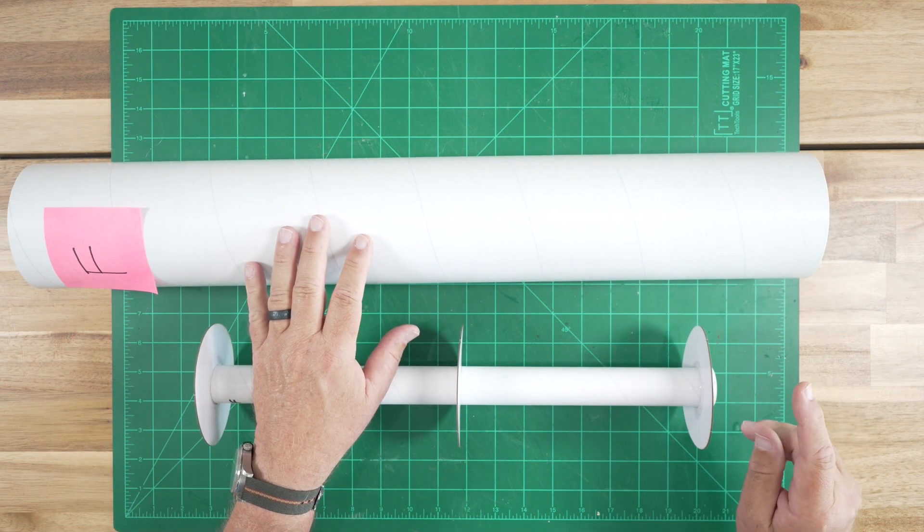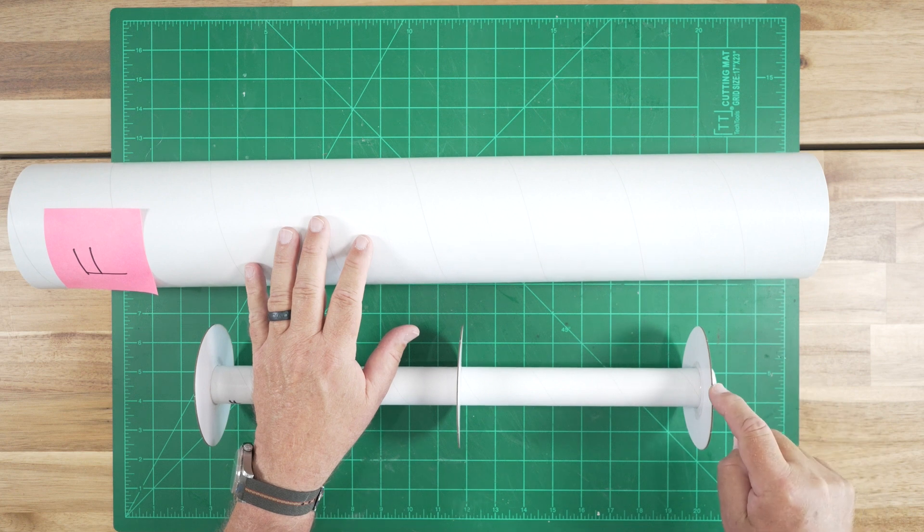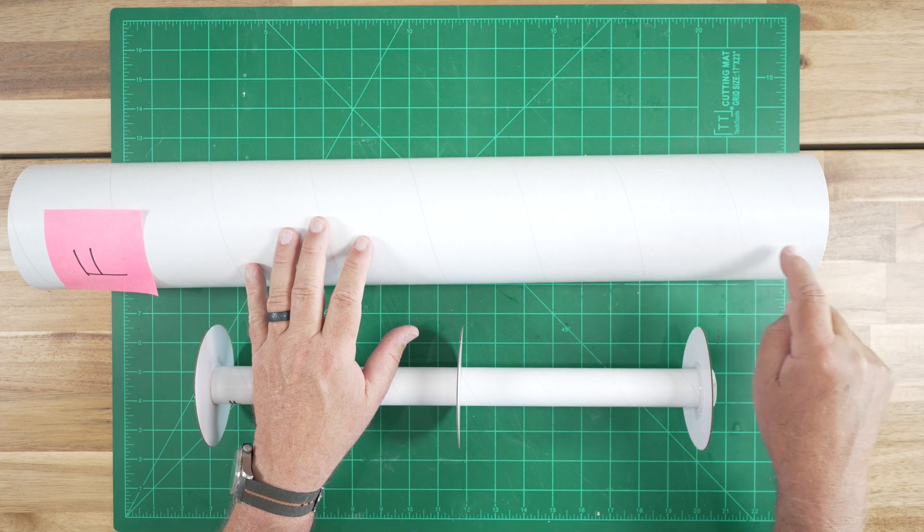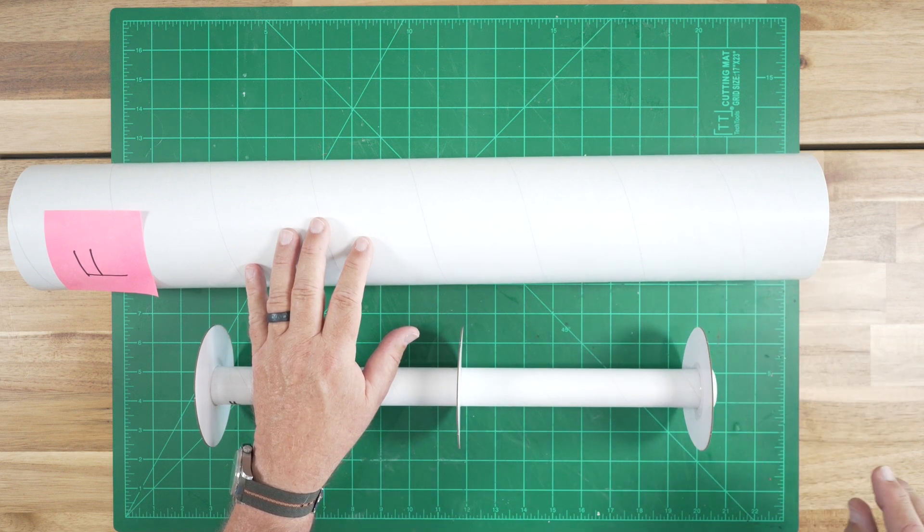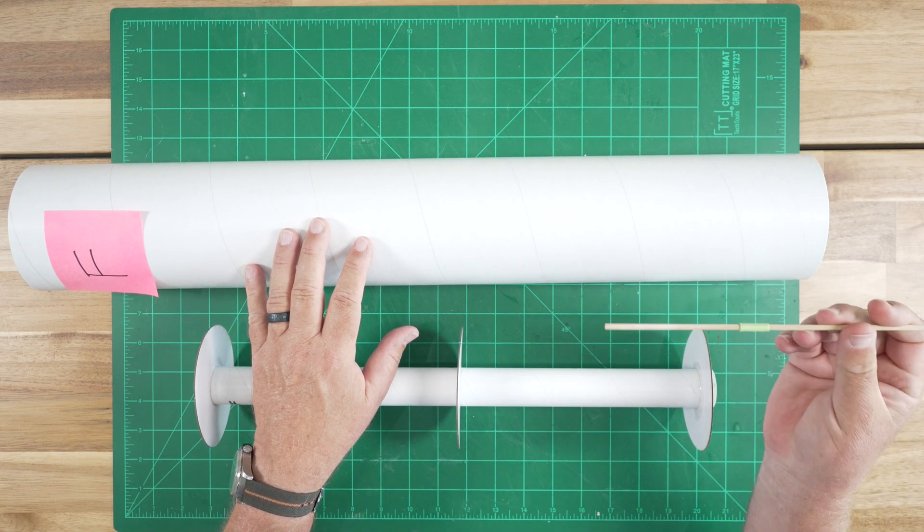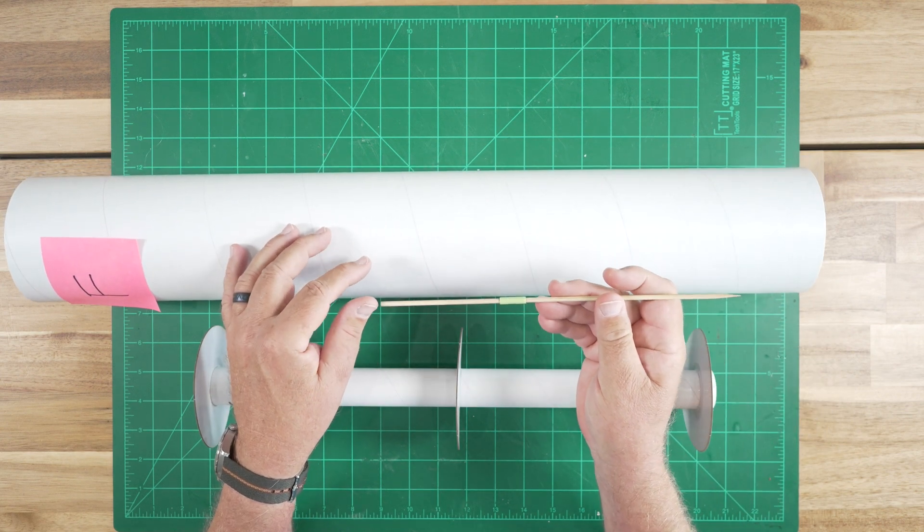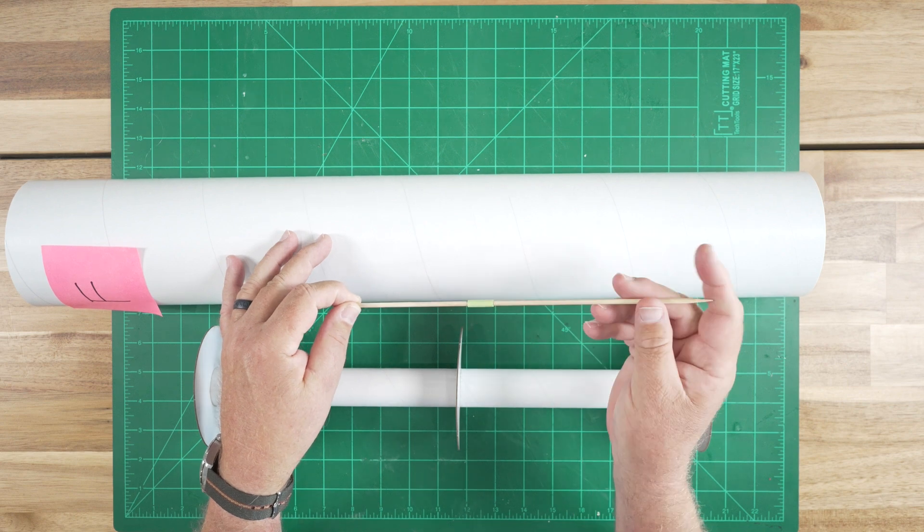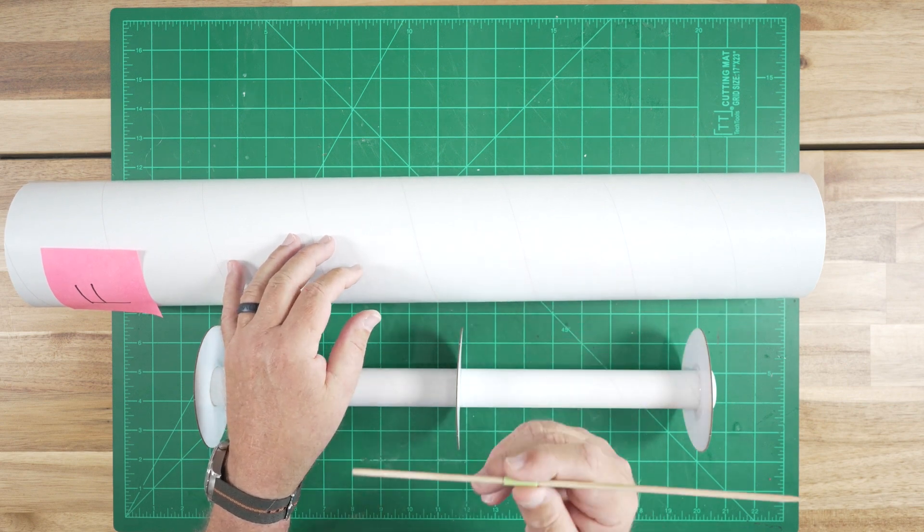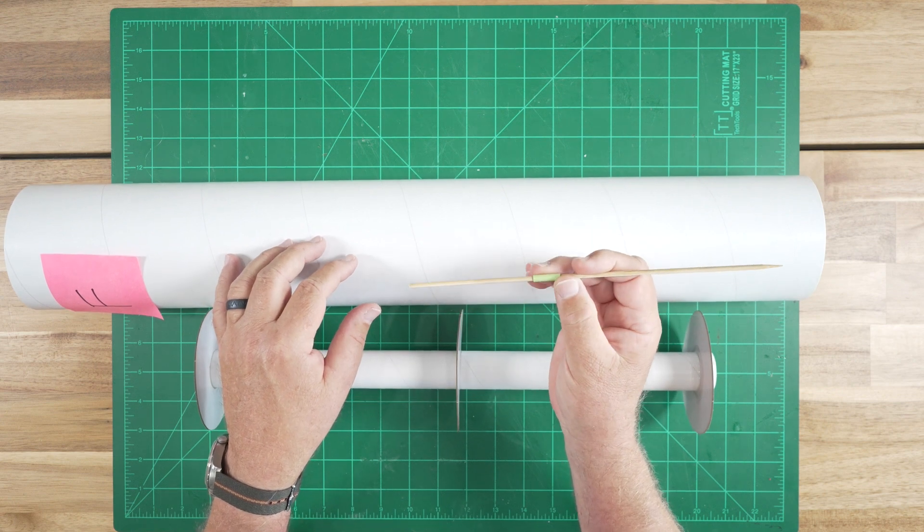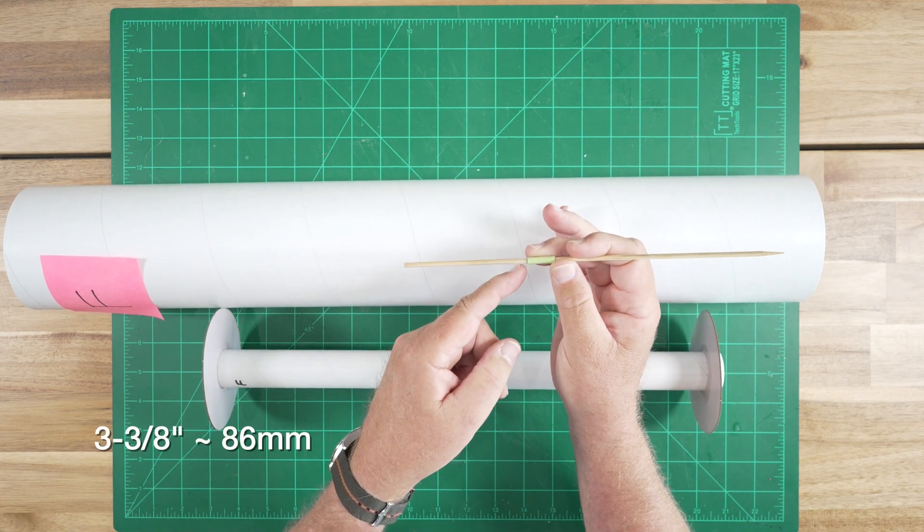Now here's a question. How can we make sure that this centering ring is the appropriate distance from the aft end of the airframe tube? That's 3 3/8 inches. Well, one way we can do that is to make a tool to help us. This is just a standard cooking skewer pointy on one end. And it won't be the last time you see it in this project. What I've done is put a wrap of tape at the 3 3/8 inch point.